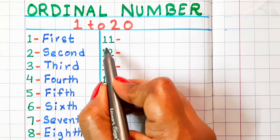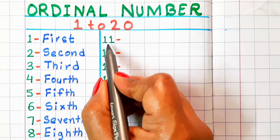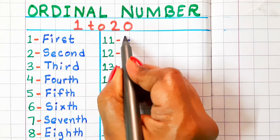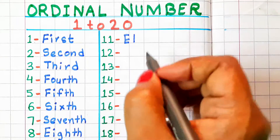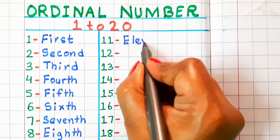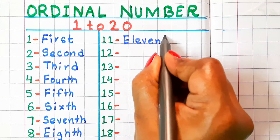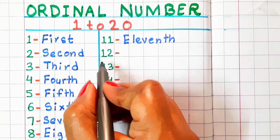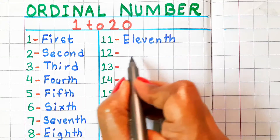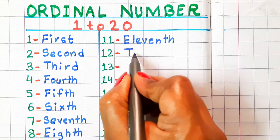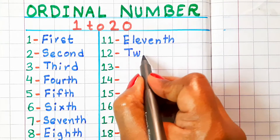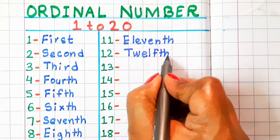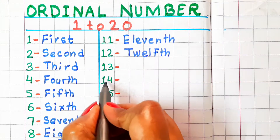11 — in ordinal number, it is called eleventh and the spelling is E-L-E-V-E-N-T-H. 12 — in ordinal number, it is called twelfth. Spelling is T-W-E-L-F-T-H.